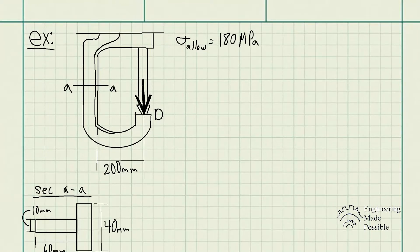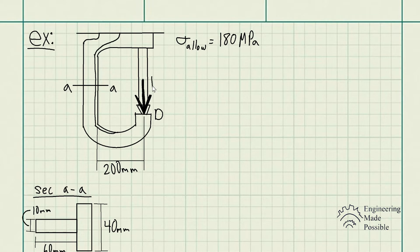For this problem statement, we need to determine the maximum ram force P that can be applied to the clamp at point D if the allowable normal stress for the material is 180 MPa. We have some sort of clamp pushing down on itself with some force P, and we're being asked what's the maximum force P such that the allowable stress does not exceed 180 MPa.